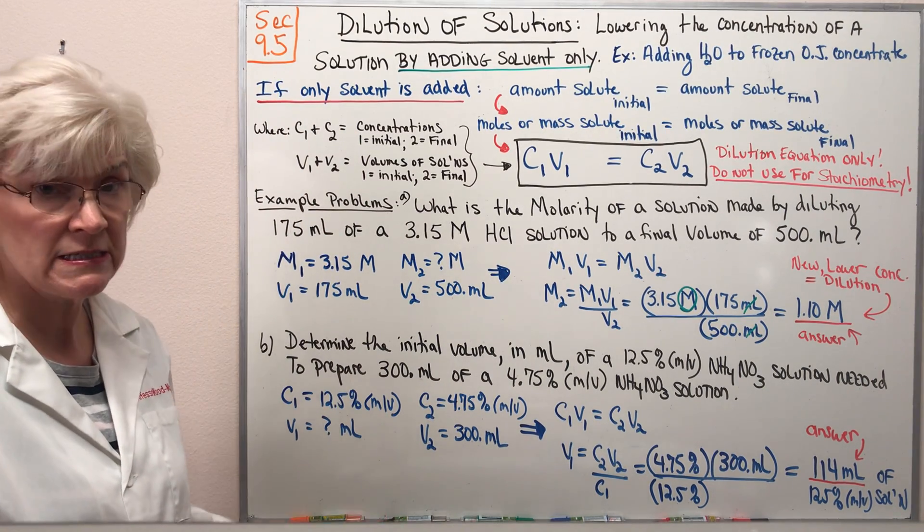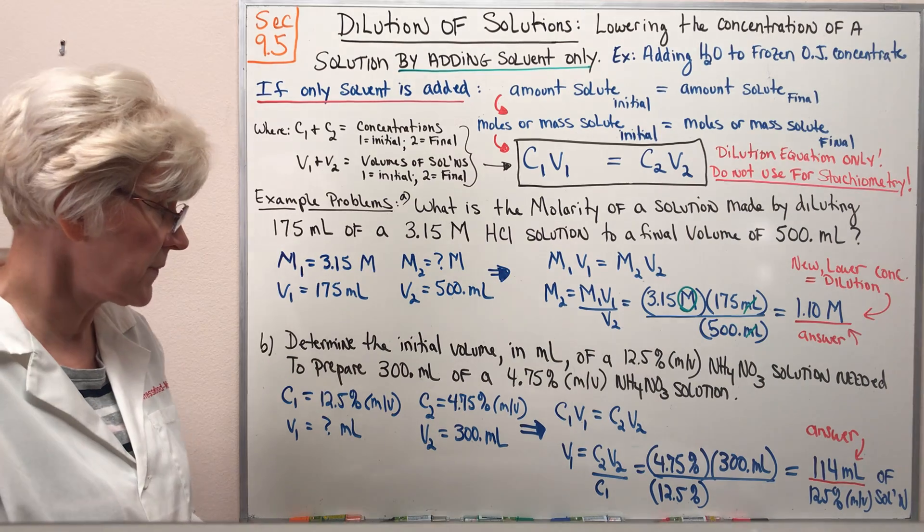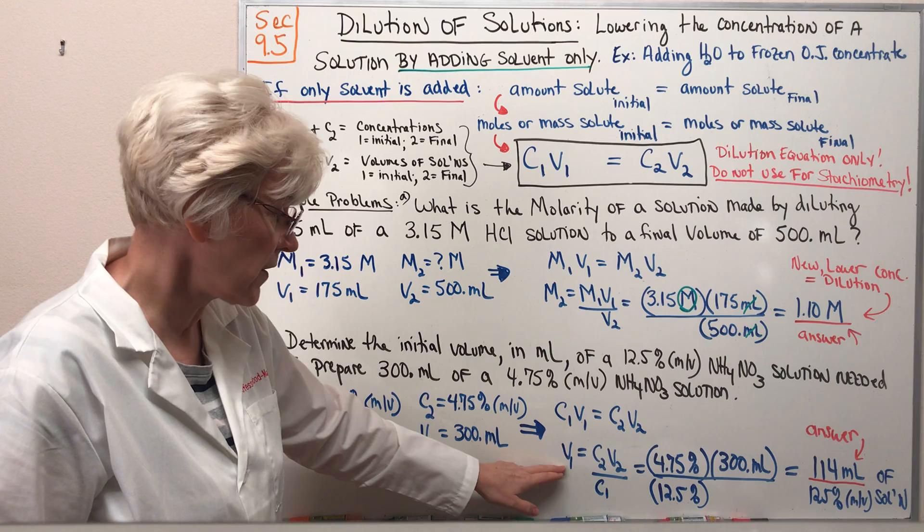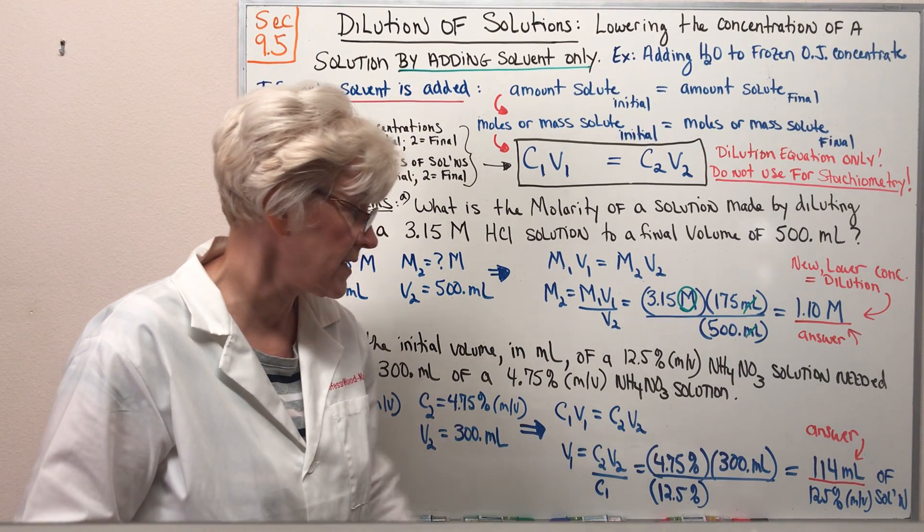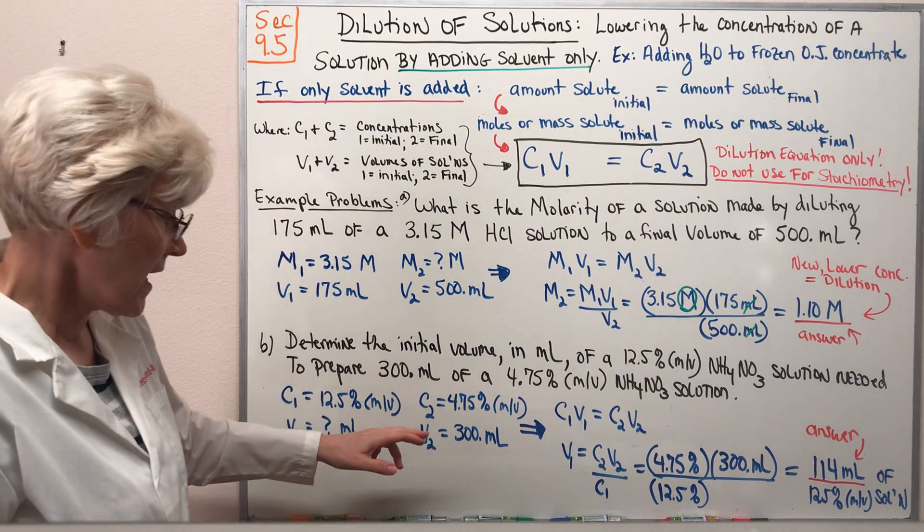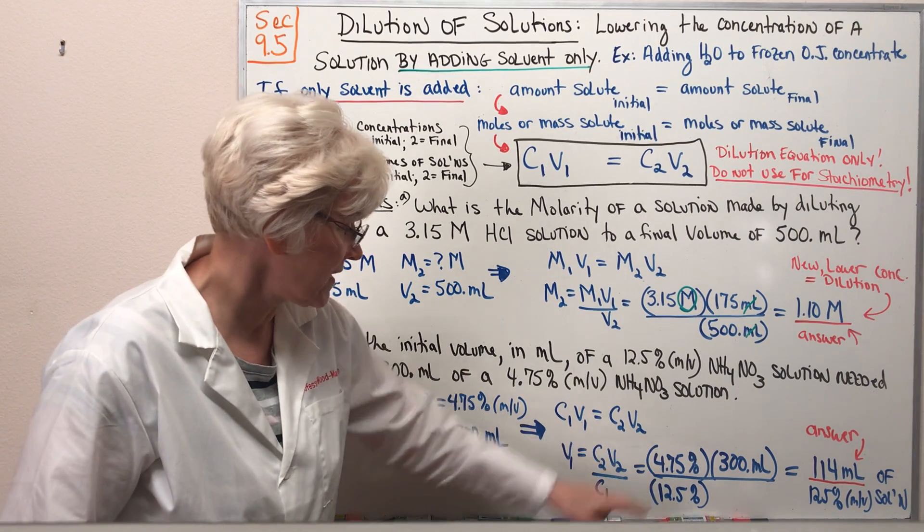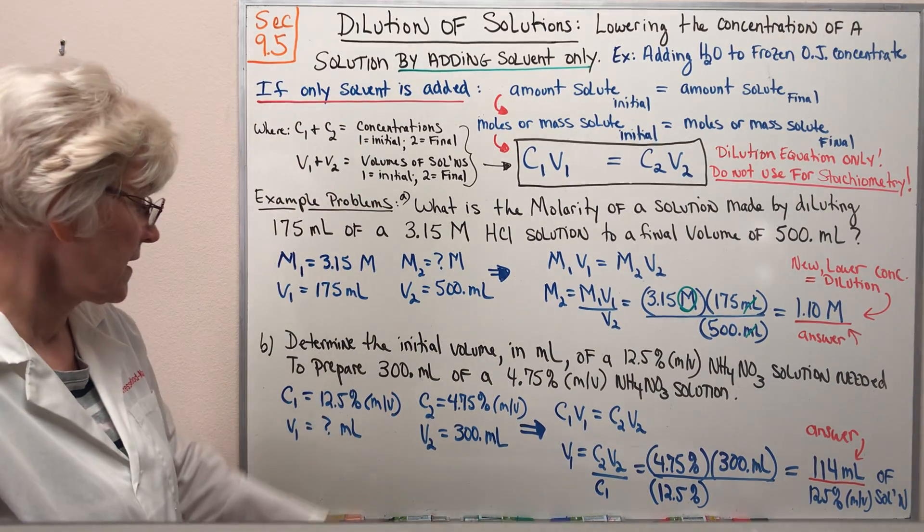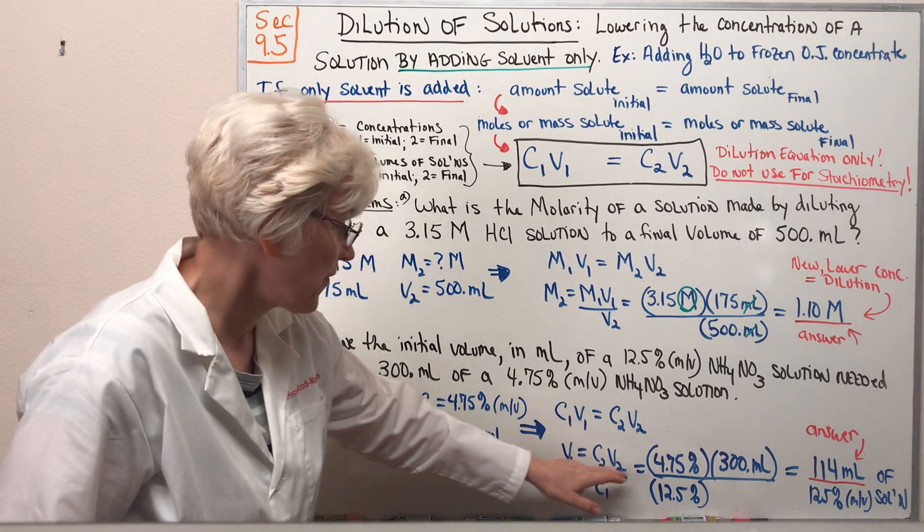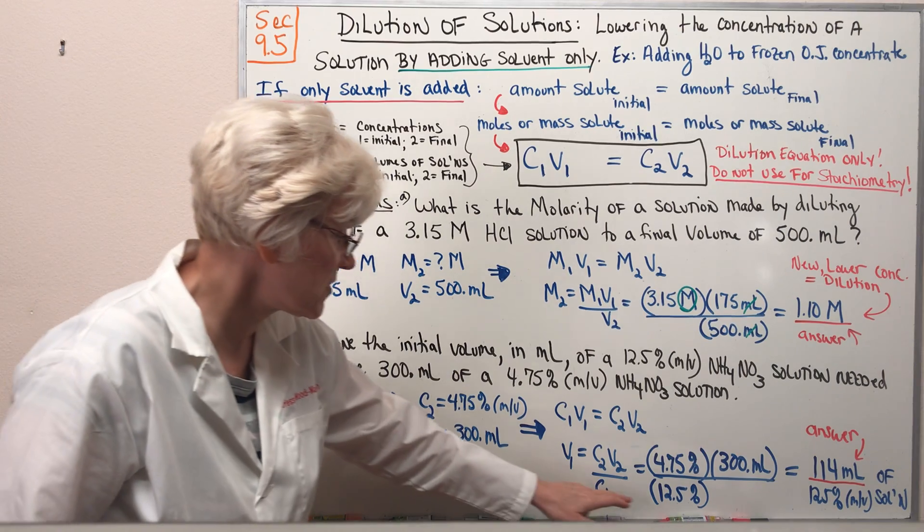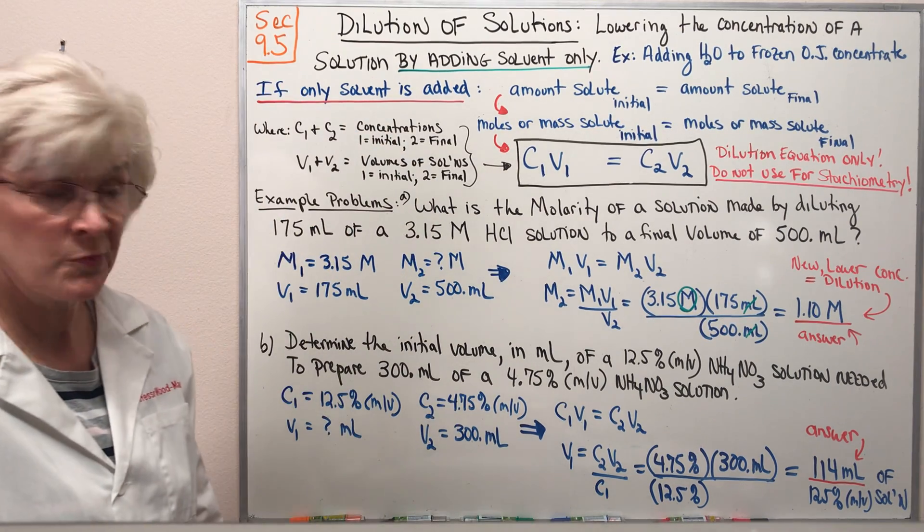Again, very simple algebraic manipulation. Once we have our equation solved for our initial volume, we just plug and chug. Our diluted final concentration is 4.75%. Our final volume is 300 mL. Our initial concentration, C1, is 12.5%.